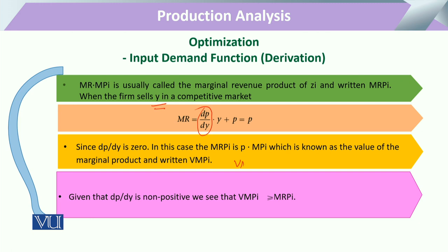VMP is written as VMP and is essentially the marginal cost of the firm. This marginal cost, or VMP, equals wi — the wage rate — or r — the interest rate — representing the price of that input. This formula is used to determine the prices of factors of production.